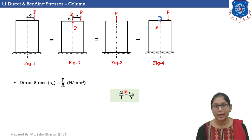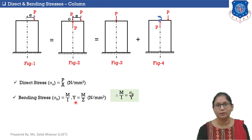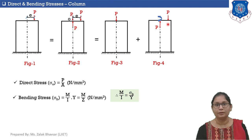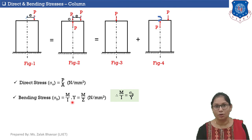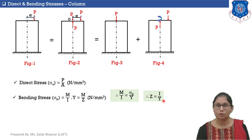The bending stress equation is M/I = σB/Y, so σB = (M/I)×Y. Here M is the bending moment, which is the moment of the couple — load times distance. The moment of the couple is P (load) multiplied by e (eccentricity). I is the moment of inertia and Y is the maximum distance of the fiber from the neutral axis. Since section modulus Z = I/Y, we can write σB = M/Z.